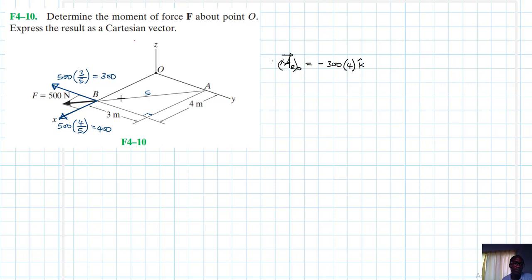This is the only one that is going to cause a moment about this. The other one, the lever arm is zero so it will not cause any moment, it's collinear.